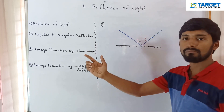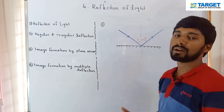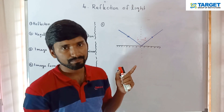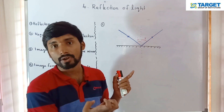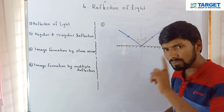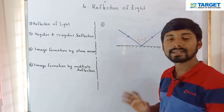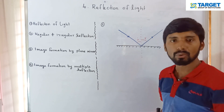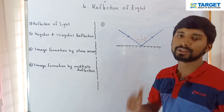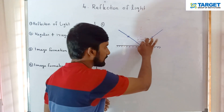The key terms are: incident ray, reflected ray, normal, angle of incidence, and angle of reflection. Now, the laws of reflection: the first law states that the incident ray, the reflected ray, and the normal all lie in the same plane.